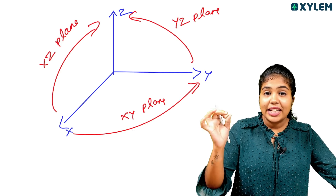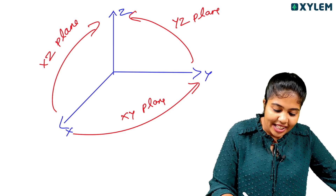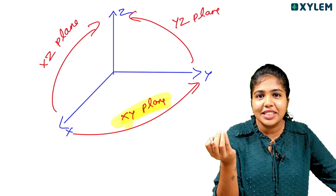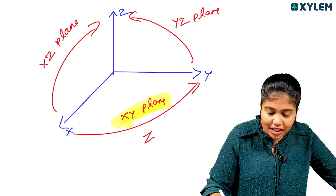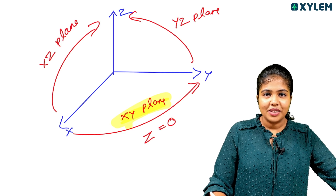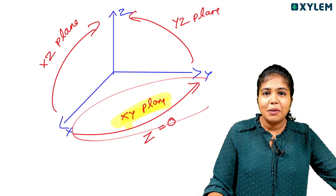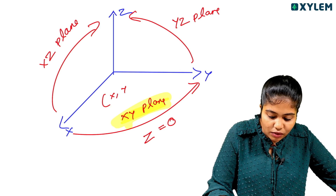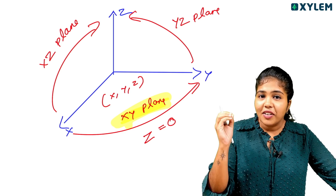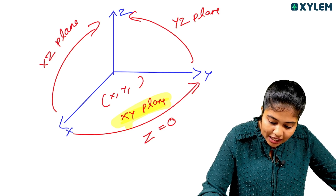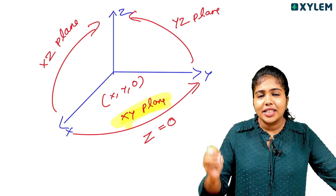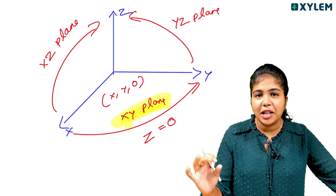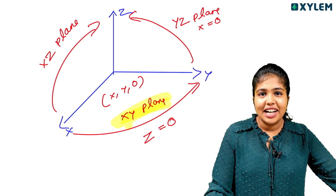The three planes are: the XY plane, the YZ plane, and the XZ plane. On the YZ plane, x is absent — x is zero. On the XZ plane, y is absent — y is zero.